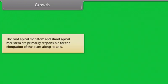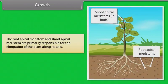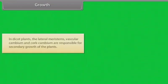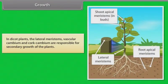The root apical meristem and shoot apical meristem are primarily responsible for the elongation of the plant along its axis. In dicot plants, the lateral meristems, vascular cambium and cork cambium are responsible for secondary growth of the plants.